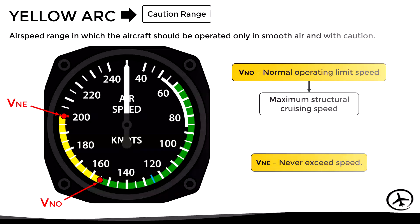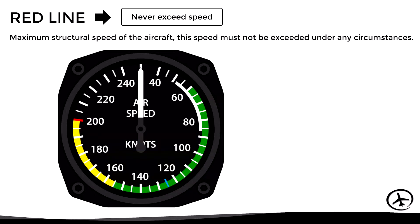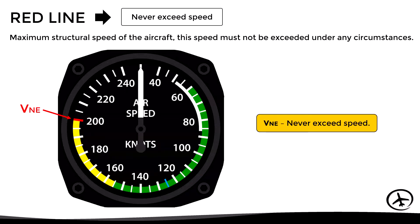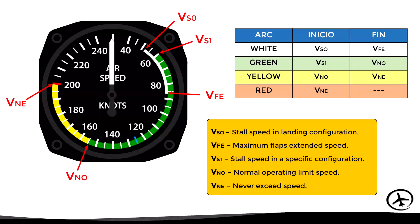The red line represents the never-exceed speed — the maximum structural speed of the aircraft that must not be exceeded under any circumstances. It is the only color represented by a line rather than an arc. In summary: the white arc runs from VSO to VFE; the green arc from VS1 to VNO; the yellow arc from VNO to VNE; and the red line marks only the VNE.